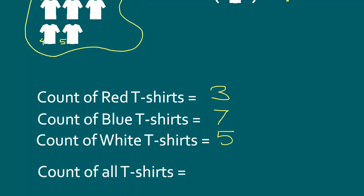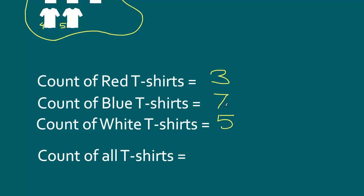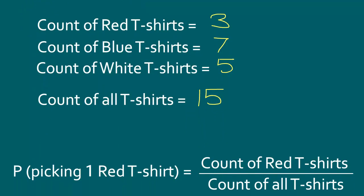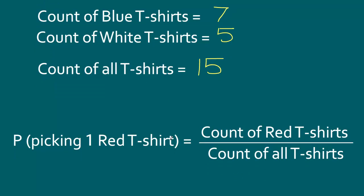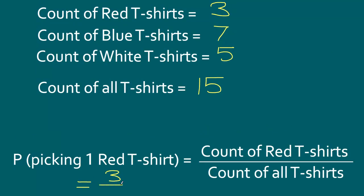Next, we are going to add all of the t-shirts. So three plus seven is ten, plus five is fifteen. We have a total of fifteen t-shirts. The probability of picking a red t-shirt is equal to the count of red t-shirts divided by the total of all t-shirts — which is three divided by fifteen, or simply one over five.